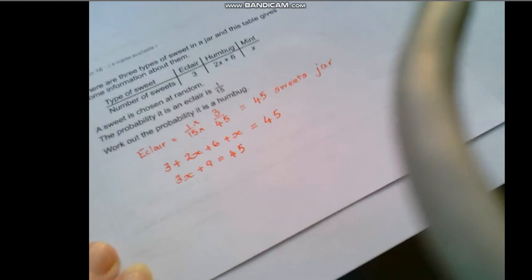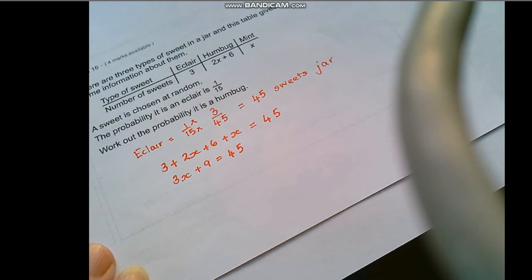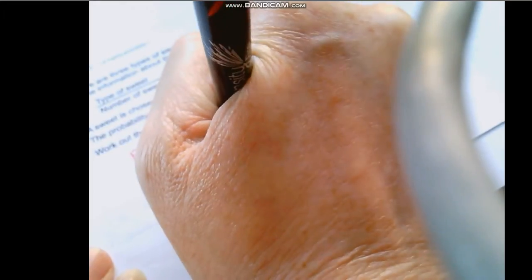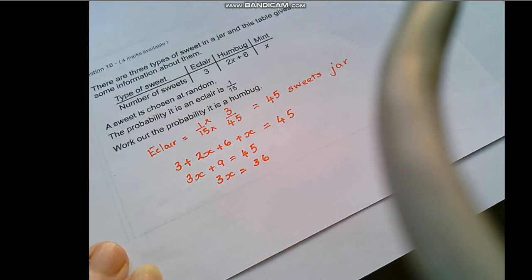So this leaves us with 3x plus 9 equals 45 and all I did there was gather the terms and then I'm going to take 9 away from both sides to end up with 3x and that equal to 36 as you can see. So we've got 3x equals 36.